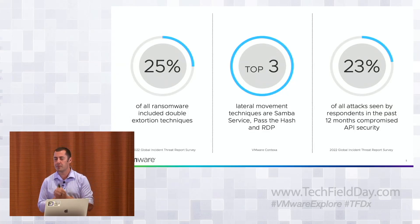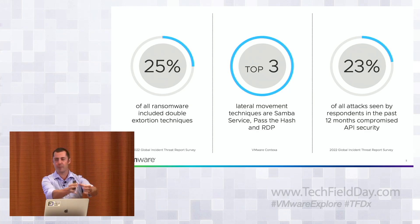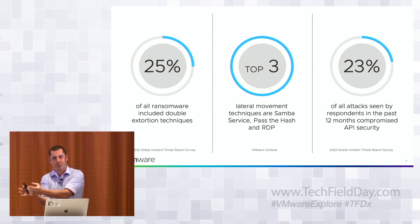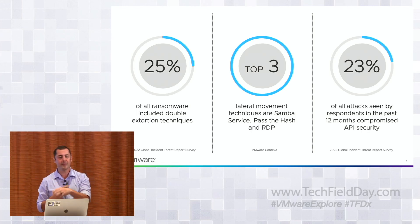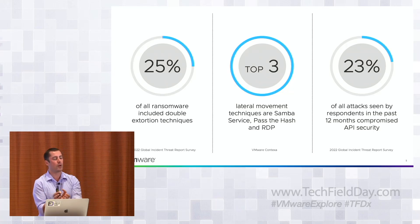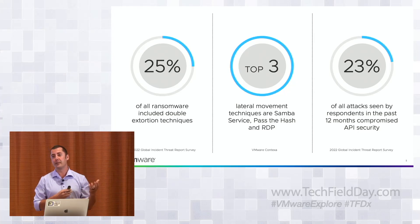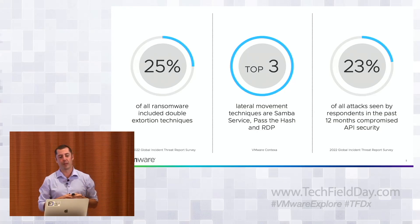Talking specifically about how attackers move laterally within a network — if you gain initial access to a VDI desktop and want to reach a database server, you could try to exploit a vulnerability like log4j. But exploits tend to be noisy with a higher chance of detection. Instead, attackers use allowed channels — common protocols like RDP or SMB to pivot the attack, or stolen passwords, credentials, or hashes to propagate.